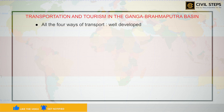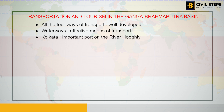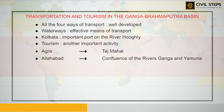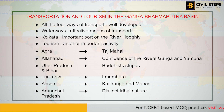All four modes of transport are well developed in the Ganga-Brahmaputra basin. In the plain areas, roadways and railways transport people, while waterways are effective along the rivers — Kolkata is an important port on the river Hooghli. The plain area also has a large number of airports. Tourism is another important activity: the Taj Mahal on the banks of the Yamuna in Agra, Allahabad at the confluence of the Ganga and Yamuna, Buddhist stupas in Uttar Pradesh and Bihar, Lucknow with its Imambara, Assam with Kaziranga and Manas wildlife sanctuaries, and Arunachal Pradesh with its distinct tribal culture are all worth visiting.